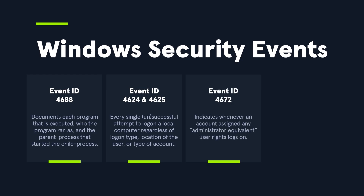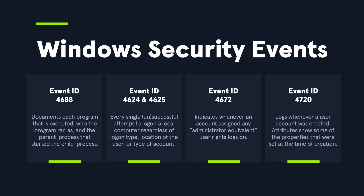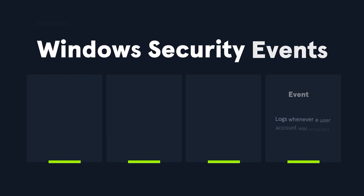Event ID 4672, or special privileges assigned, fires when a privilege token is used. If a normal user suddenly gets admin-level actions, you kind of want to know why. And event ID 4720, the user account created event, is also key — backdoor accounts are a favorite persistence trick, and an unexpected 4720 is like finding a new key under a doormat.